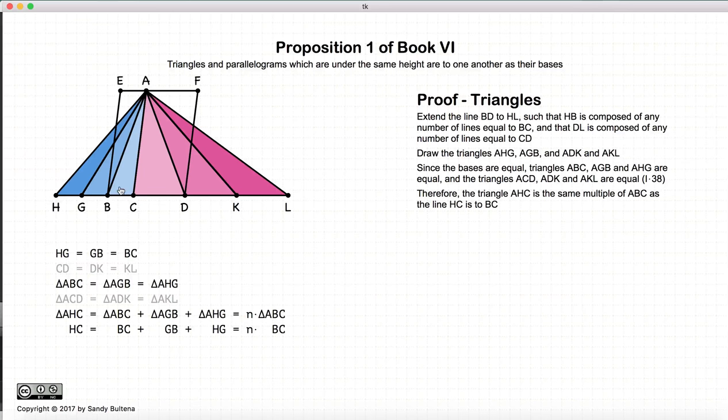Let's look at the blue triangles just for a moment. I can look at the triangle AHC. Now AHC is composed of, in this example, three triangles of equal size. The base of AHC is also composed of three segments, all of equal size, in this case BC.